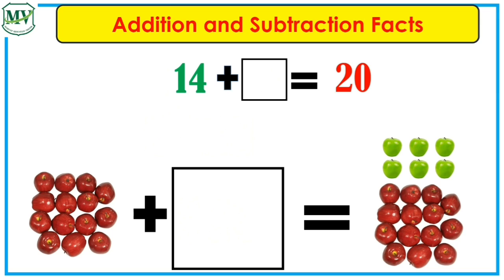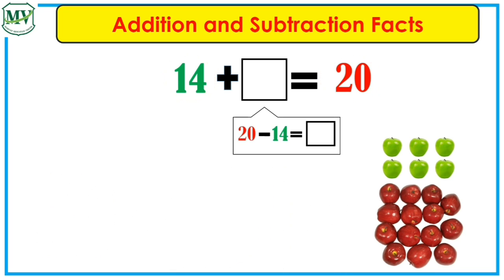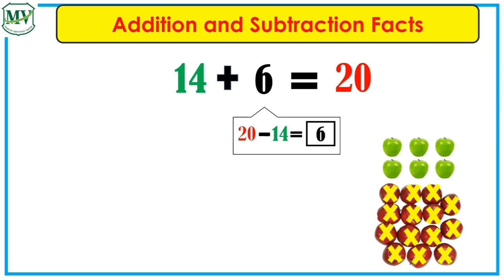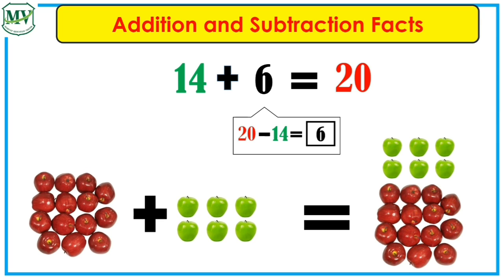How about if the addend is missing? What should we do? That's right! Subtract 14 from 20. So, 20 minus 14 is equal to 6. Very good! 6 is the addend, and 14 plus 6 is equal to 20.